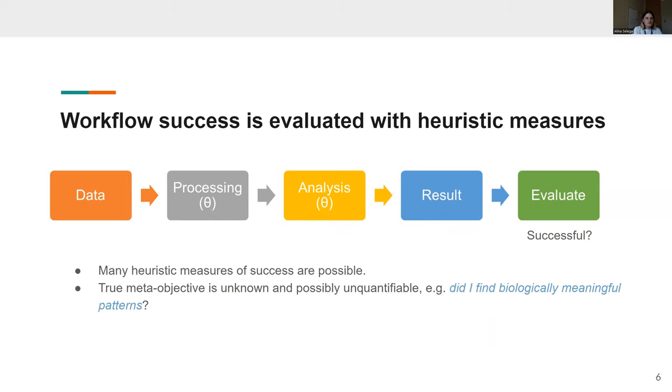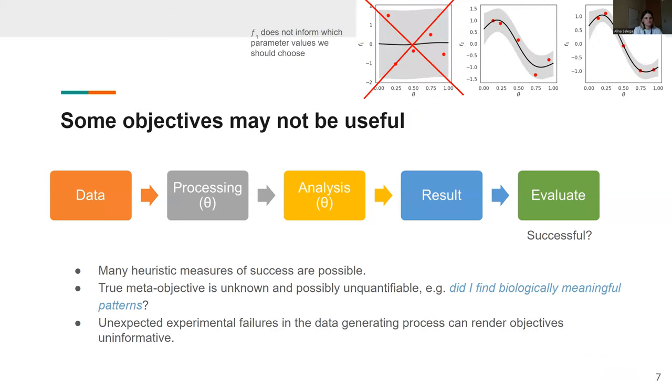In any case, all of these different measures are assumed and supposed to approximate the true meta-objective that is unknown and possibly even unquantifiable. Because in the context of biomedical analysis, it might represent a very complex question, such as, did I find biologically meaningful patterns in my data?